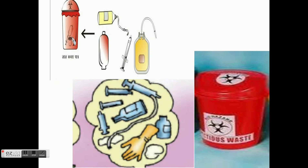Next comes Red. Red, as we know, is dangerous for the environment. So, Plastics are dangerous for the environment. Any substance made of Plastic, like Tubings and Syringes which are infected, are put in the Red Bucket.